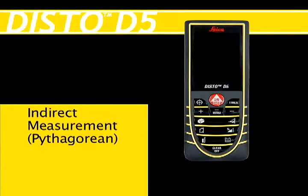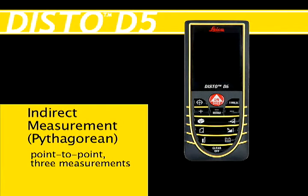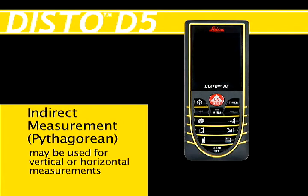Indirect measurement: point to point, three measurements. For example, measuring full height when part of a wall is below grade. This feature may be used for vertical or horizontal measures — for example, measuring the length of a wall section from a distance.